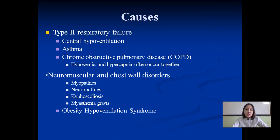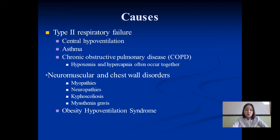Main causes of Type 2 respiratory failure include central hypoventilation, asthma, and chronic obstructive pulmonary disease (causing hypoxemia and hypercapnia together). Also neuromuscular and chest wall disorders: myopathies, neuropathies, kyphoscoliosis, myasthenia gravis, obesity hypoventilation syndrome — which is rare but important to know.